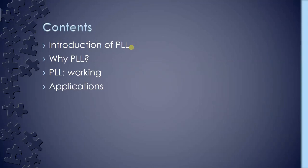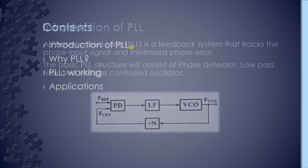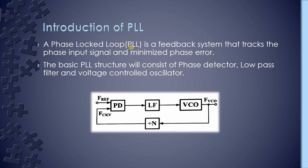In this video we will discuss the introduction of PLL, why PLL is used, PLL working, and applications. PLL stands for Phase Locked Loop. It is a feedback system that tracks the phase of an input signal and minimizes phase error. The basic PLL structure consists of a phase detector, a low pass filter, and a voltage controlled oscillator.